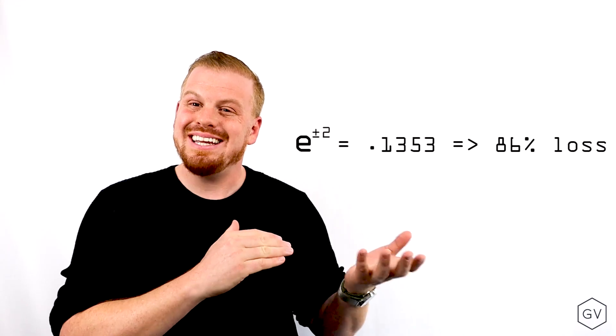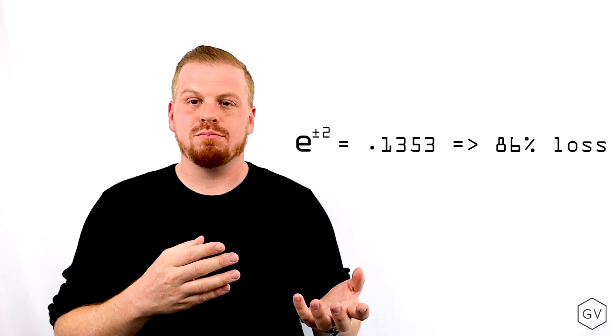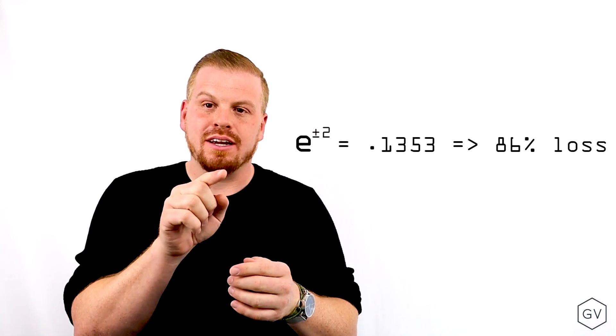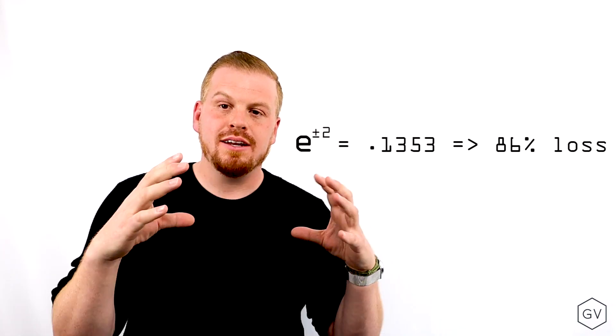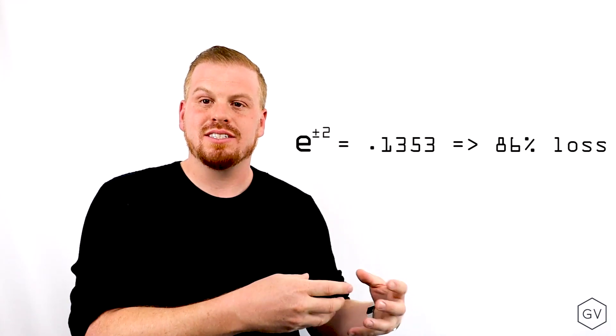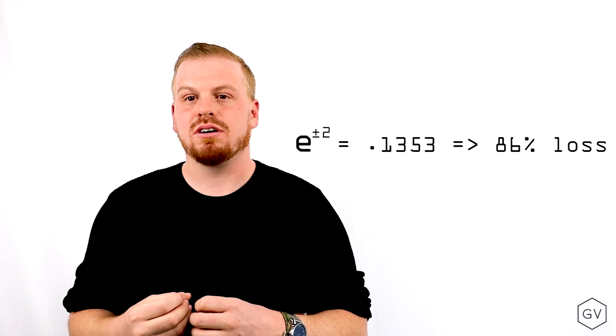But if we have 200% continuously compounded to the downside, that's really a loss of about 86% in absolute terms. Because since the asset is continuously compounding, as losses accumulate, the denominator is getting smaller and smaller. Therefore, the losses get smaller and smaller in absolute terms. So that's the significance of using continuously compounded returns in option pricing.